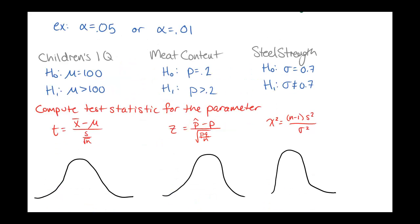The alpha value — just like with confidence intervals where we had a 95% confidence interval corresponding to an alpha of 0.05 — is the same idea here. Alpha is typically a small amount: 5% is very common, so 0.05 or 0.01, 0.02, 0.1 — something like that.